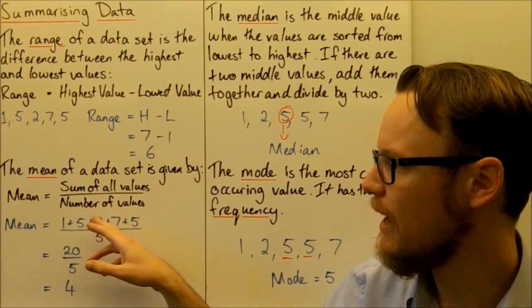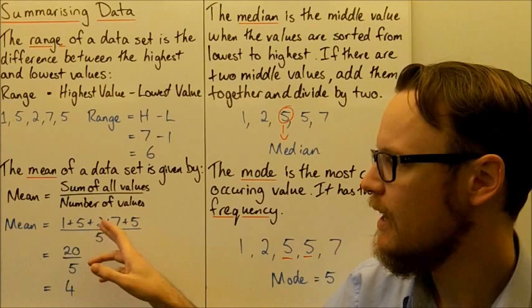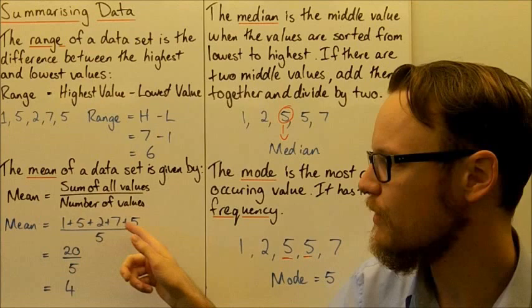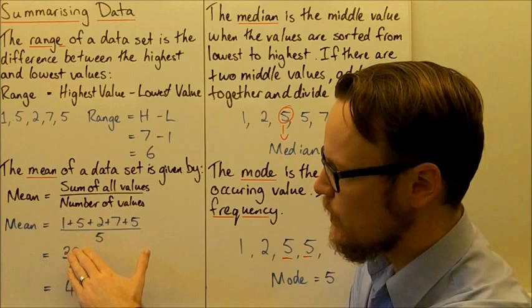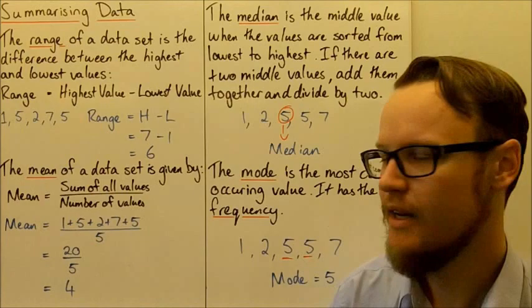So the mean for our example: if we add up all the numbers — 1 plus 5 plus 2 plus 7 plus 5 — we get 20. And there are 5 different values. So we take all the values, add them up, and divide by how many there are. 20 divided by 5 is 4. So the mean for this data set is 4.